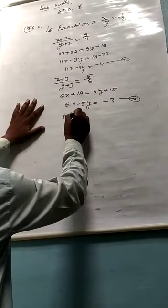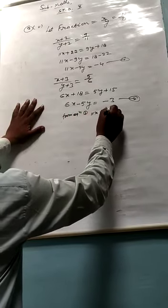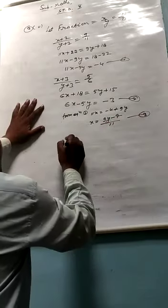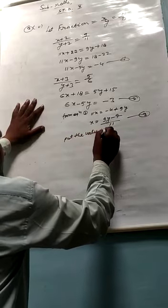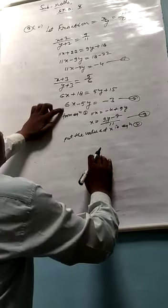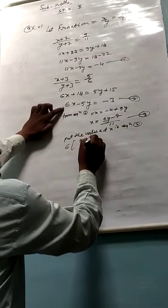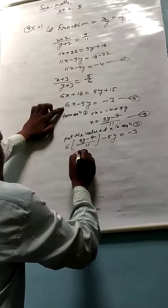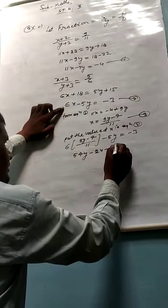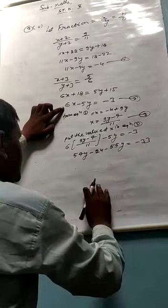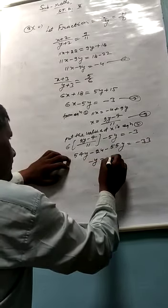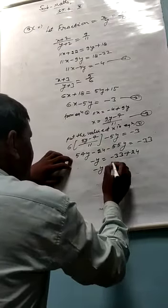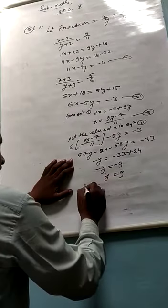From equation 1, 11x equals minus 4 plus 9y. x equals 9y minus 4 upon 11. Isko equation 2 me put karenge. 6 times (9y minus 4 upon 11) minus 5y equals minus 3. 54y minus 24 minus 55y equals minus 33. 54y minus 55y minus 24 equals minus 33. Minus y equals minus 33 plus 24. Minus y equals minus 9. y equals 3.